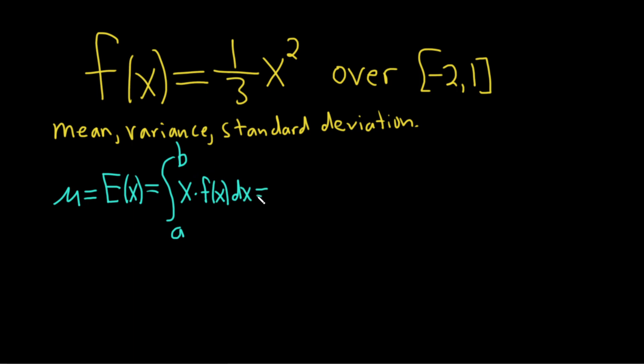This equals the definite integral where a is negative 2 and b is 1, so from negative 2 to 1 of x times one-third x squared dx.